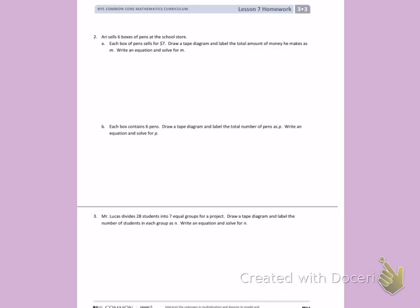Number 2. Ari sells 6 boxes of pens at the school store. Part A: Each box of pens sells for $7. Draw a tape diagram and label the amount of money he makes as M. Write an equation and solve for M.